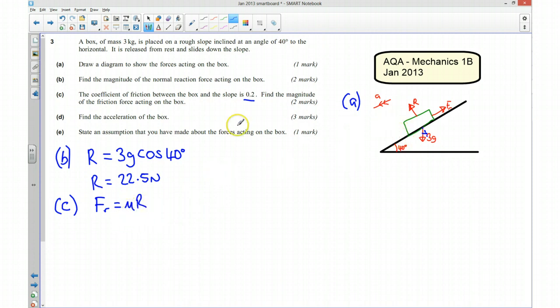Okay, so, we know what the reaction force is from this question here. And we know that mu is our coefficient of friction 0.2. So it's just a simple case, our friction force is going to be 0.2 times by 22.5. And although I've written 22.5, I'm going to use 3G cos 40 to get a more accurate answer. And that's going to be equal to, if you put that into your calculator, you get 4.50 newtons. So that's going to be the magnitude of the frictional force.